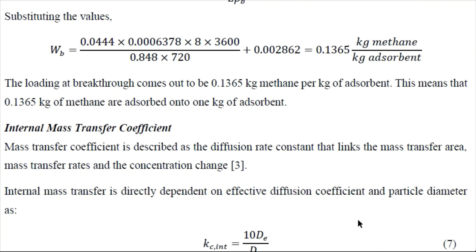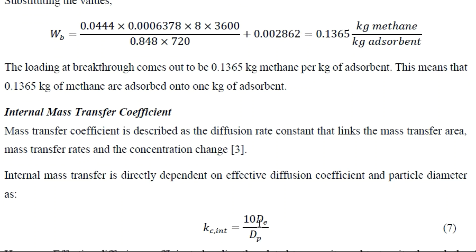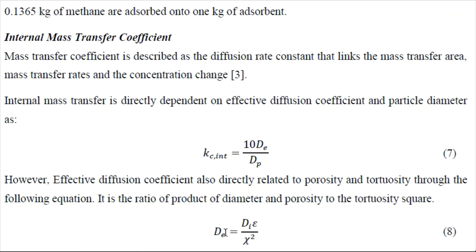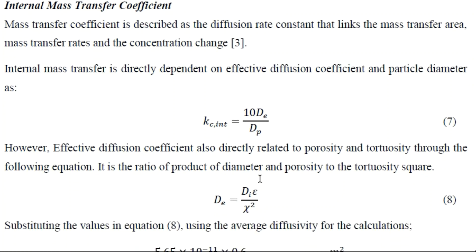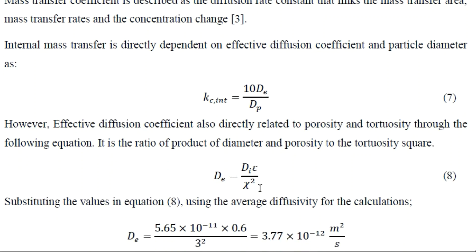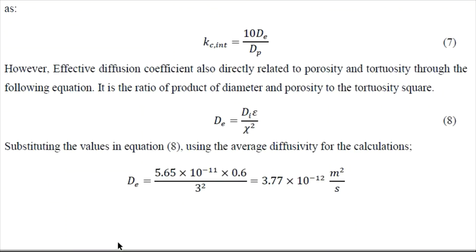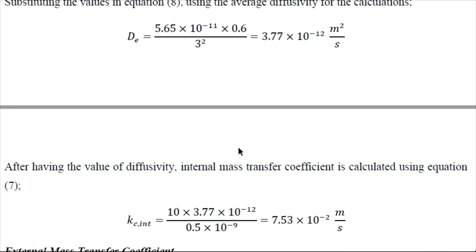So now we can determine the internal mass transfer coefficient which is given by this formula, 10 DE over DP. So for DE, which is basically effective diffusion coefficient, it is given by diffusivity and porosity over torosity. So we have all of these parameters. So we can determine this effective diffusion. So now we can use equation number 7 to calculate the internal mass transfer coefficient which comes out to be 7.53 into 10 to the power minus 2 meter per second.